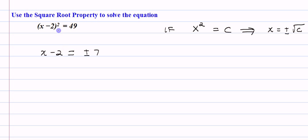Alright, so now we've gotten rid of the square. The right-hand side, fortunately, was a perfect square, so we just get plus or minus 7.